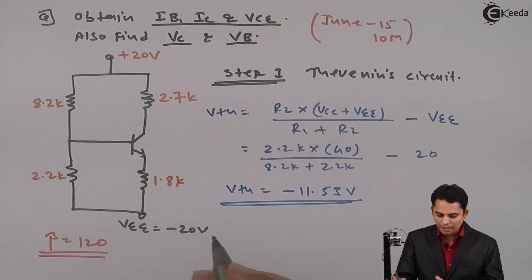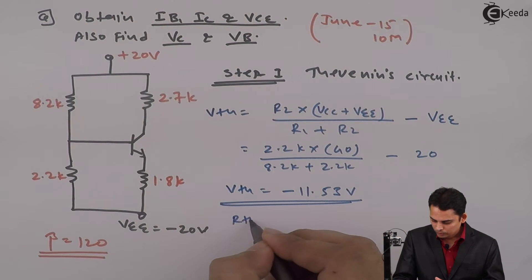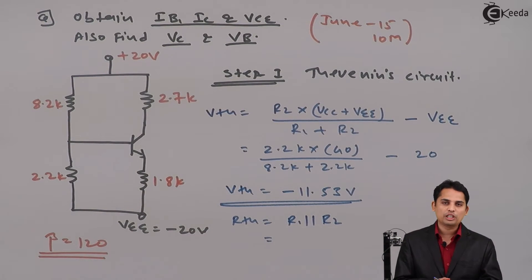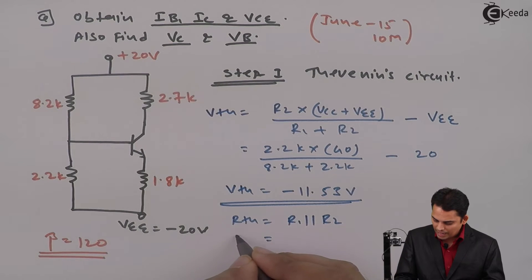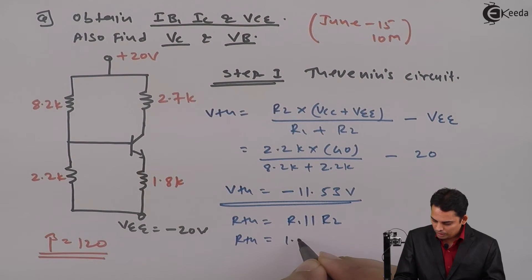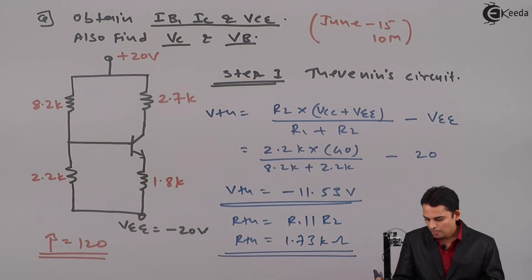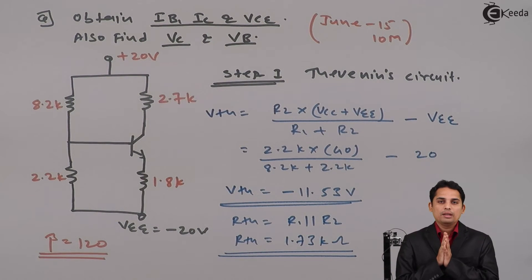Now Rth is equal to R1 parallel R2. And hence if we have parallel combination of 8.2 kilo parallel with 2.2 kilo, the answer will be Rth will become 1.73 kilo ohms. So from step 1 we have got Thevenin's equivalent voltage Vth and Thevenin's equivalent resistor Rth.